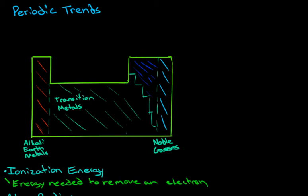In the last video, I talked about the different kinds of properties that are present on the periodic table and that an atom has. In this video, I want to talk about where the periodic trends are — how does ionization energy change as we move left to right on a periodic table? So let's get started.